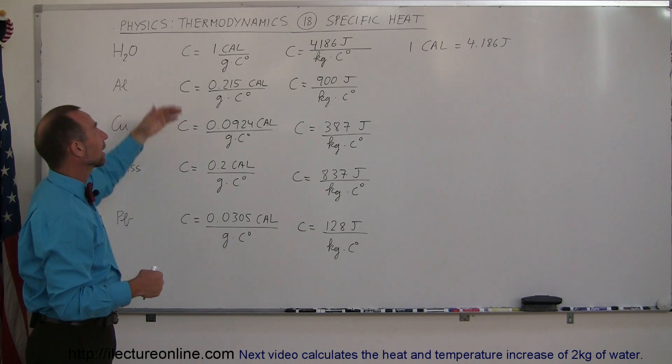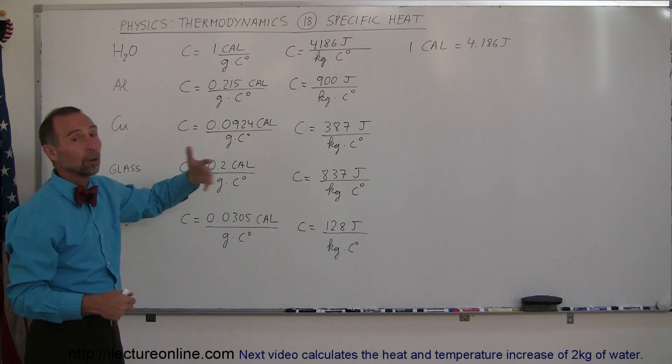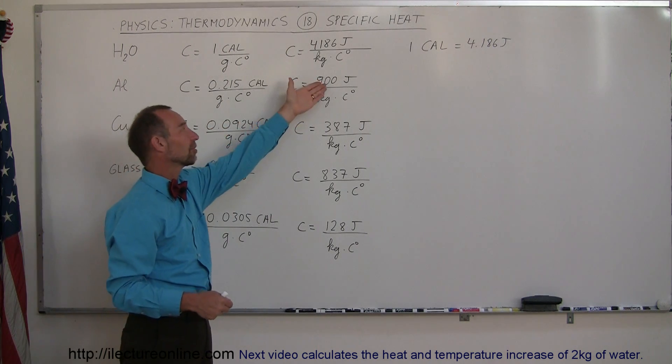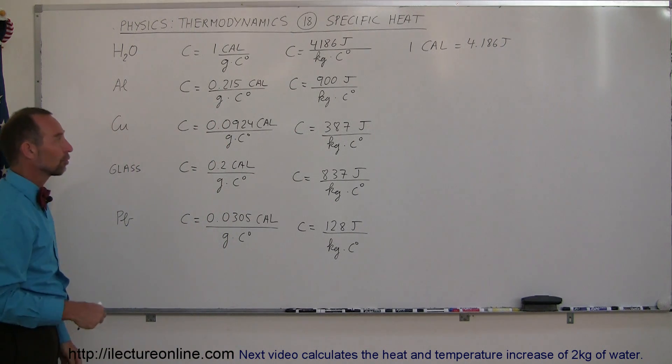If you add one calorie to one gram of aluminum, the temperature would go up by almost 5 Celsius degrees. Converting to joules per kilogram, it's 900 joules required to increase the temperature of one kilogram of aluminum by one Celsius degree.